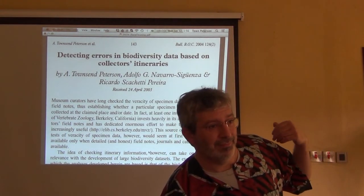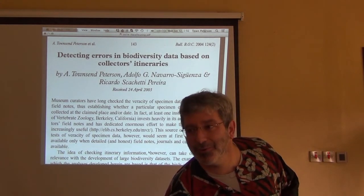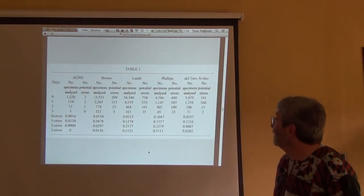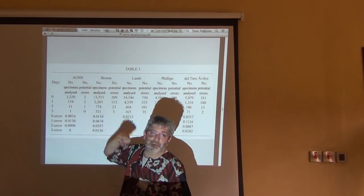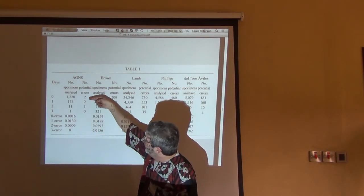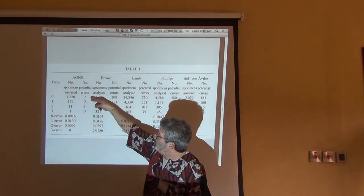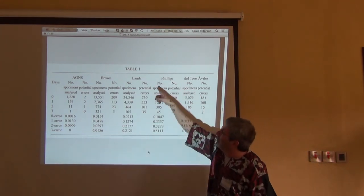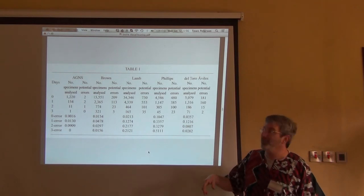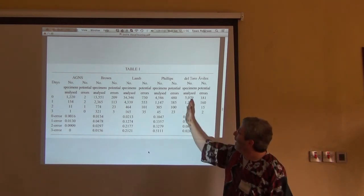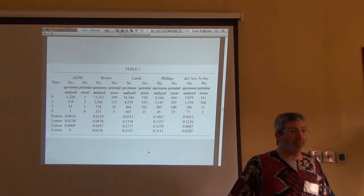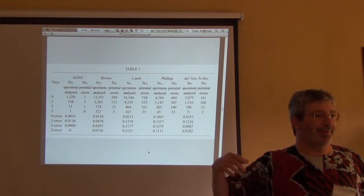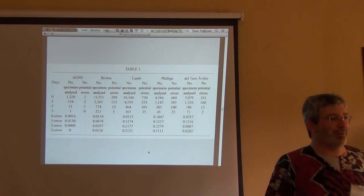This is one very solid argument for sharing data, even when there are still errors in the data. Here's Adolfo's data — we found probably two errors. Here's Alan Phillips, the person from the earlier example. You can see different error rates across collectors. No data set is ever error-free — even the data collected by the authors of the paper had problems in it.